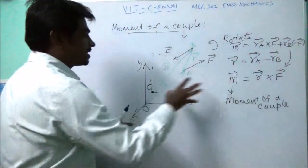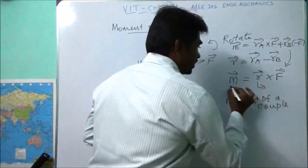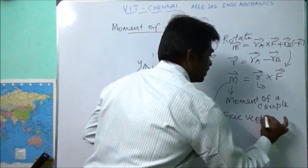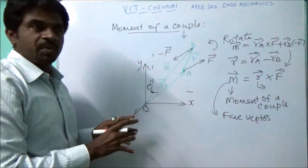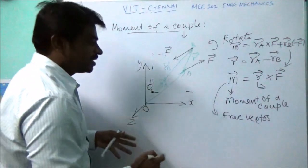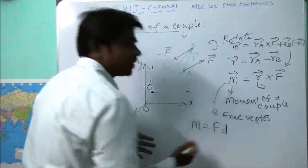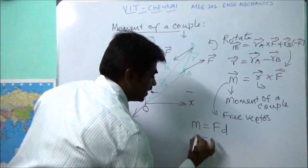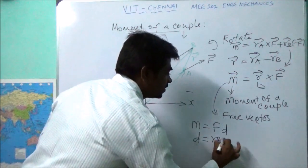Since the moment of a couple is independent of the choice of O, the M vector is a free vector — that means we can move a couple anywhere in a system. The moment of a couple or couple is a free vector. Its magnitude is equal to force times perpendicular distance, where d equals r sine theta.